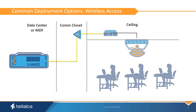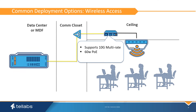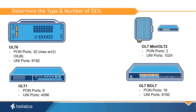Specialized ONTs are used to support wireless access points. PON fiber reaches two ONTs installed in ceiling areas, almost eliminating copper cabling. These ONTs support the high bandwidths and high PoE wattage required for modern Wi-Fi access points. Additionally, ONTs for wireless deployment can be installed in plenum areas without special plenum-rated mounting brackets or boxes.